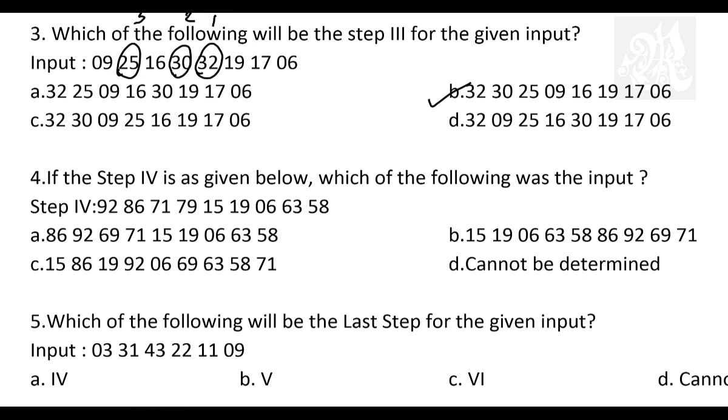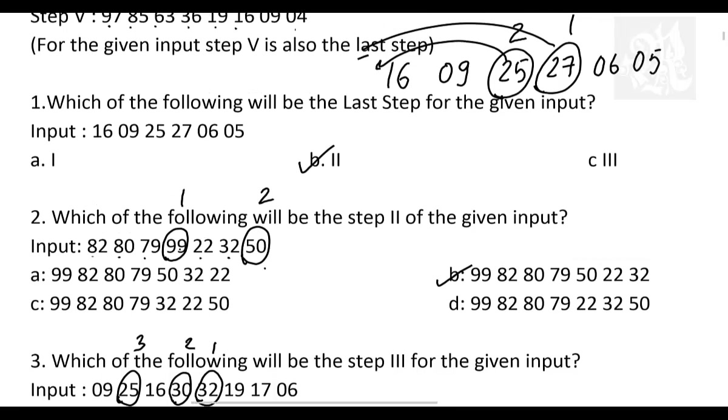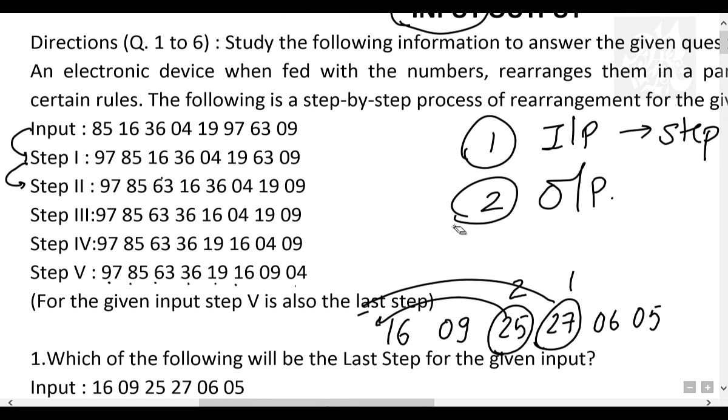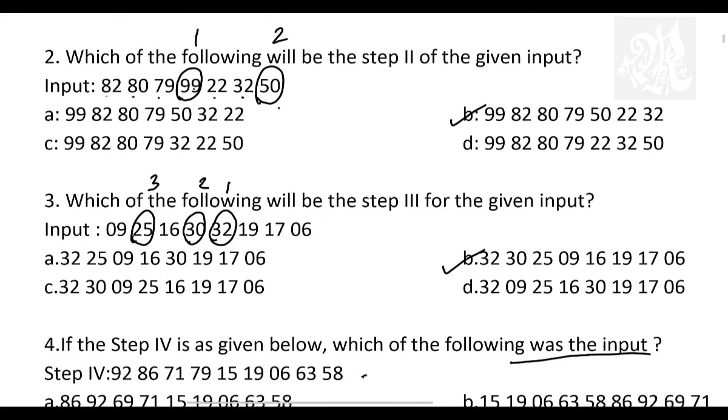Very important question. Question number 4, please mark that important. If step 4 is given below, which was the input? The answer is cannot be determined. Always keep this in mind. When you talk about ascending or descending sort, you cannot find out the previous step. You cannot backtrack. I'll tell you a simple reason behind. Now let's say I have given you this step. Can you tell me where did 97 come from? Where was it in the start? No, right? Wherever 97 were, it was here. But wherever it was, let's say it was here, in any case, it would have come in the first place. Which means the initial position doesn't matter. Which means you cannot backtrack.